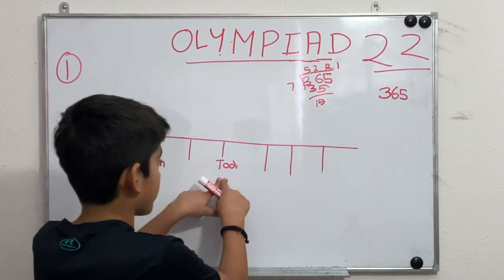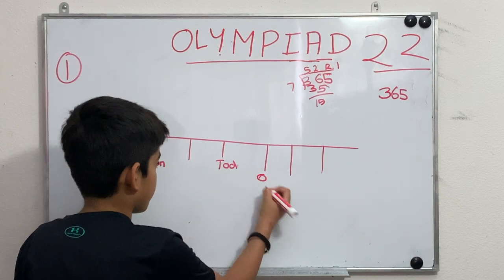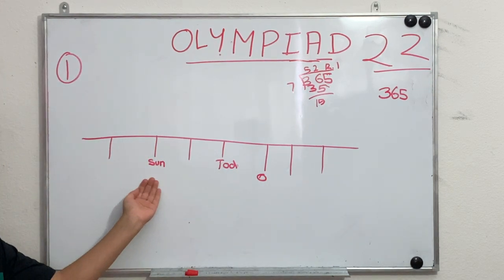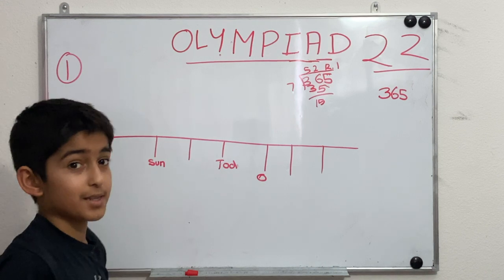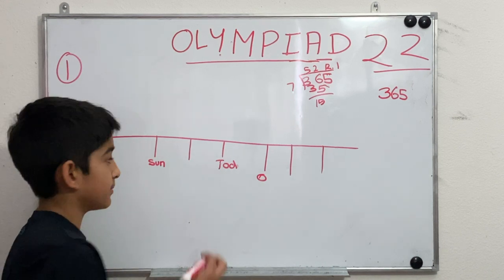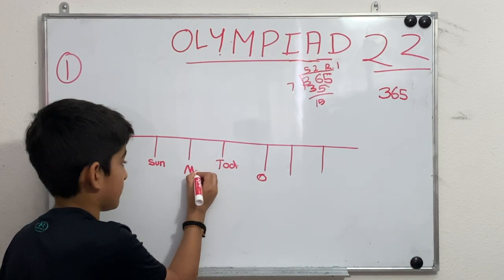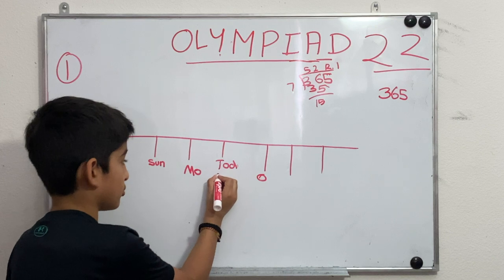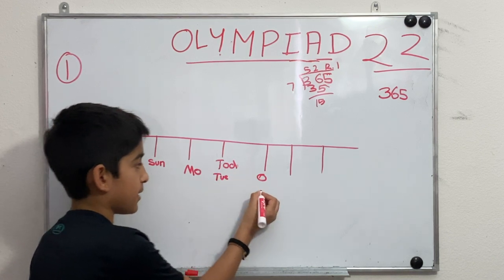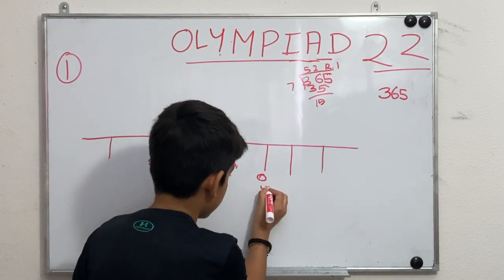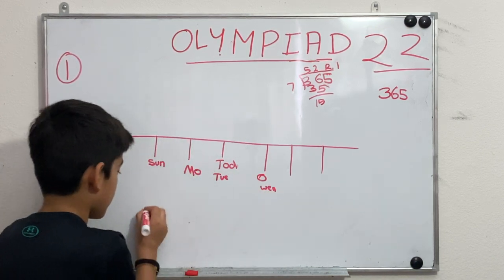The remainder of 1 means it's going to be one more day ahead of us. Since two days ago was Sunday, today is Tuesday. One day past today is Wednesday, so Wednesday should be our answer.